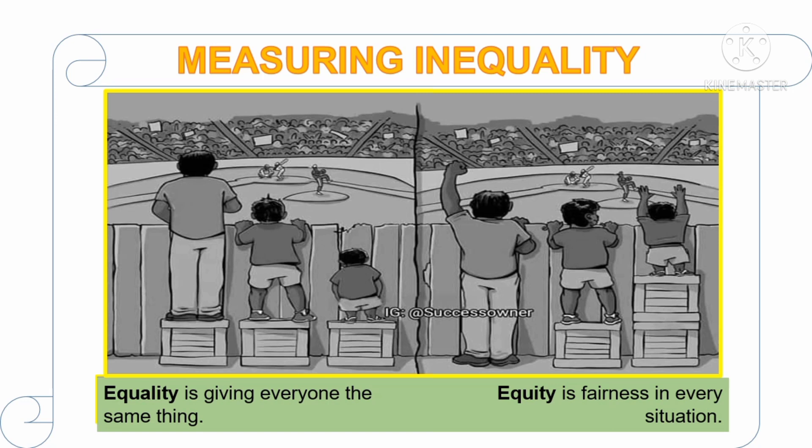The picture on the left side portrays equality, while on the right side portrays equity. On the left photo, each individual is given an equal size and number of chairs, but not everyone is enjoying or seeing the games. Inequality in terms of height is addressed by providing everyone equal number and size of chairs, but it turns out to be useless because someone else remains worse off.